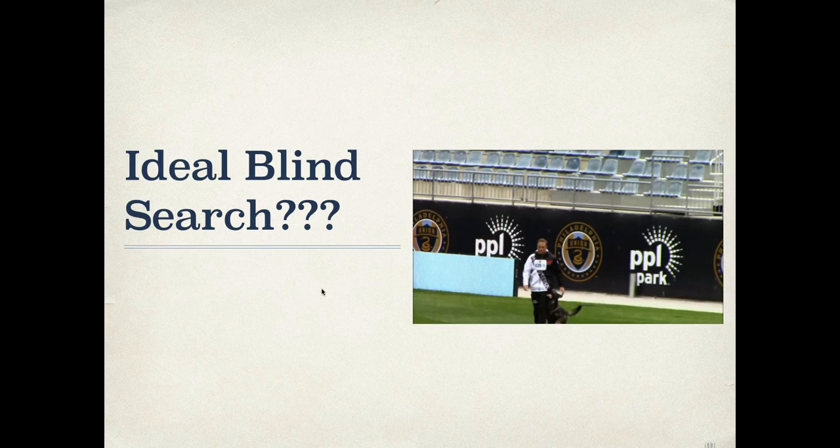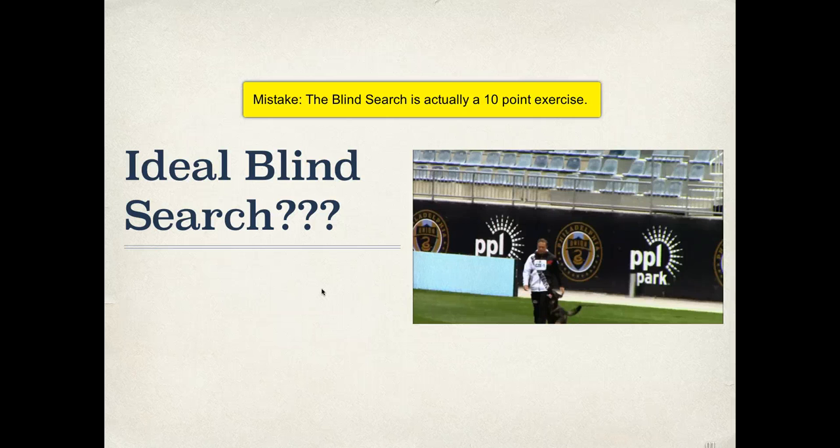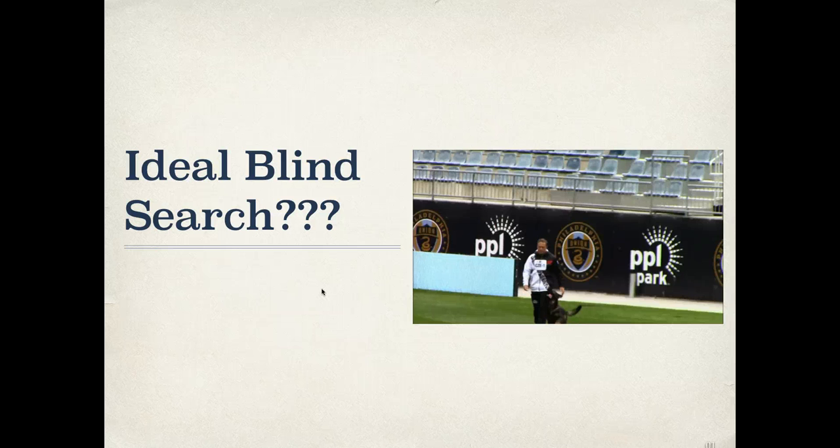Before we get started I really want to share why I put an emphasis on the Blind Search. It's only five points of the entire protection routine. However, I feel like it sets the mood for the entire routine. A lot of times you see dogs that mess up the Blind Search who then go on to be out of sync the rest of the routine. I think this comes because the dog in the back of his mind knows he screwed something up. So then he goes into his bark and hold with a little questioning and maybe a little pressure from the handler. So I like to get a nice good Blind Search as a good tone setter.